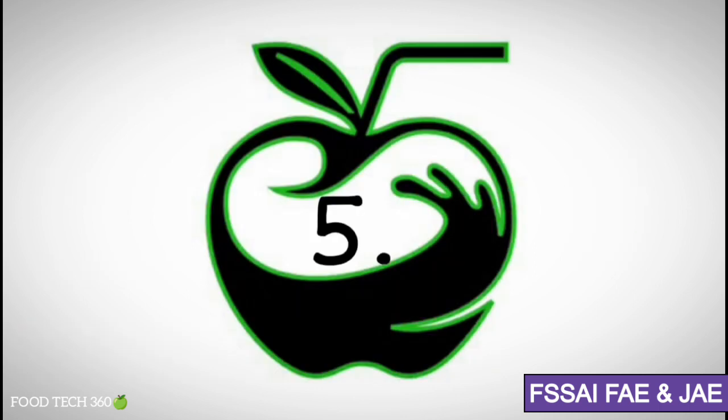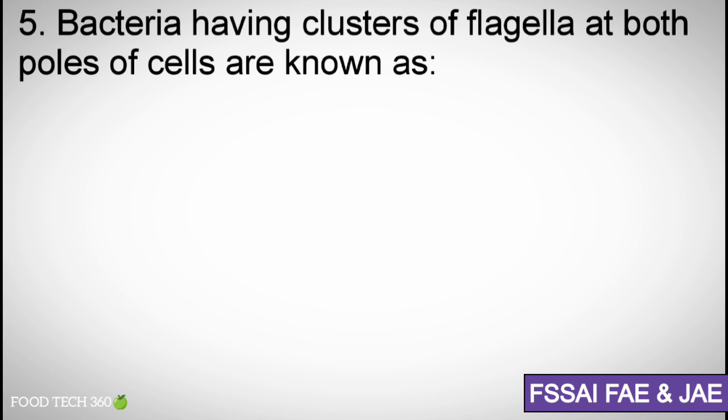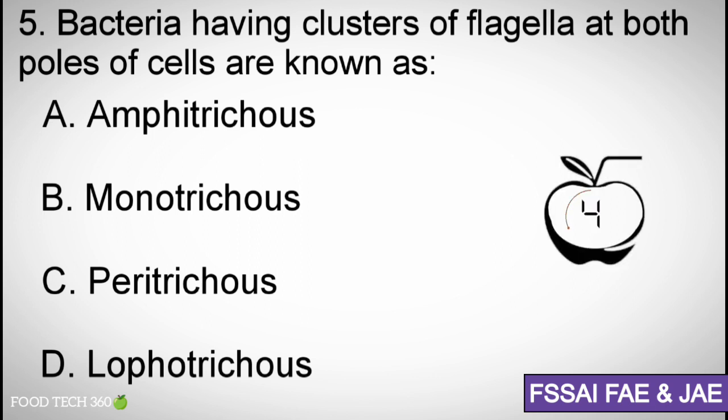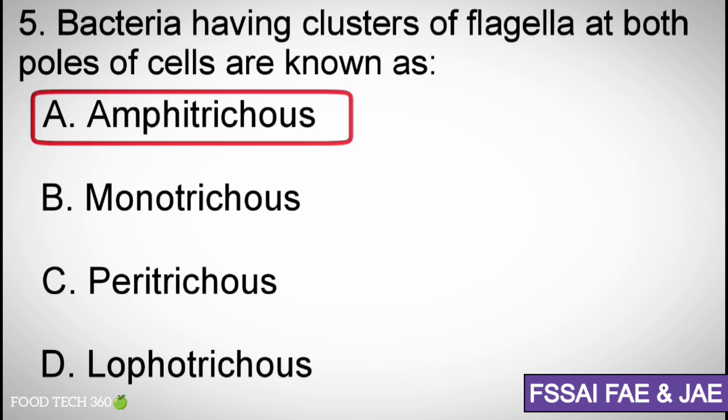Question number 5. Bacteria having clusters of flagella at both poles of cells are known as: A. Amphitrichous. Correct answer: A. Amphitrichous.